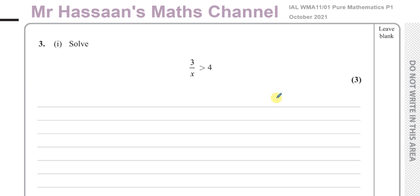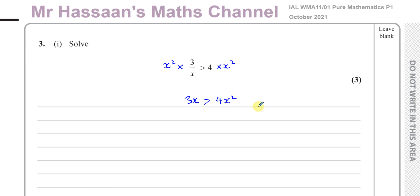To get around that issue, we can multiply by a number that will eliminate x as a denominator and is guaranteed to be positive. That number is x squared. If I multiply both sides by x squared, the x and x squared cancel out leaving 3x, and the other side becomes 4x squared. So we have 3x is greater than 4x squared. Note that x squared is always positive, no matter what value of x you use.